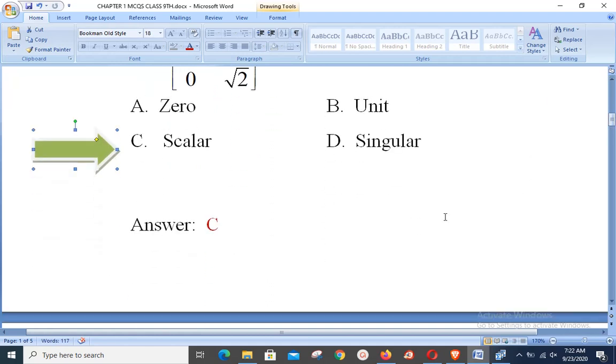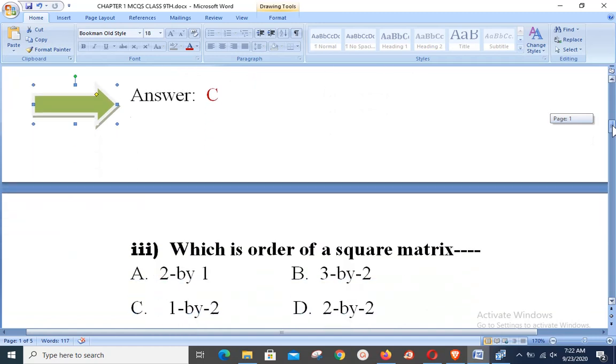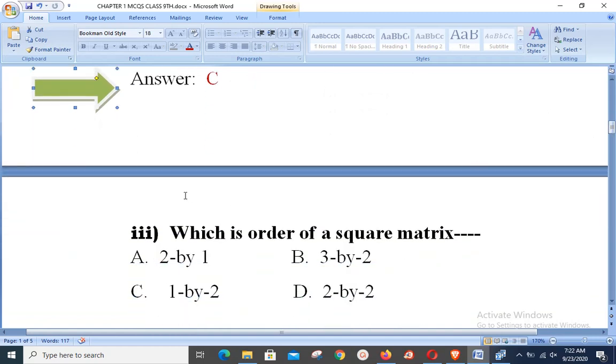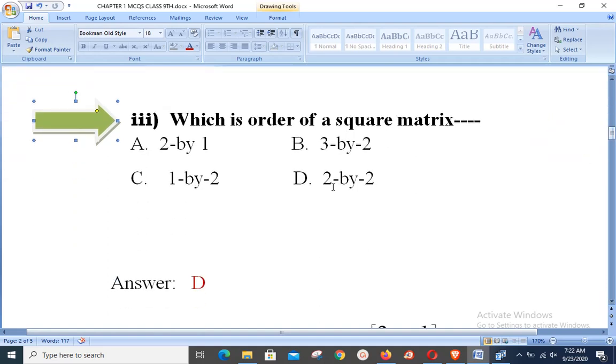Going ahead towards the third objective statement, which says: which is order of a square matrix? Dear students, you know that in a square matrix, number of rows and number of columns are equal, which according to these four options is option D only. Here is 2 by 2, means there are 2 rows and 2 columns, so option D is my correct answer.